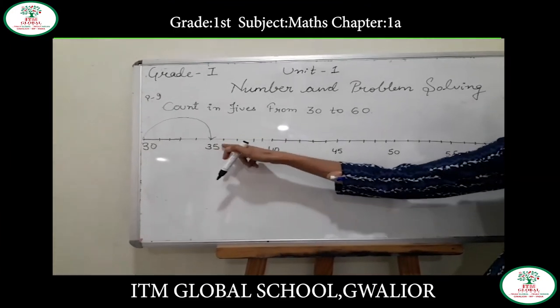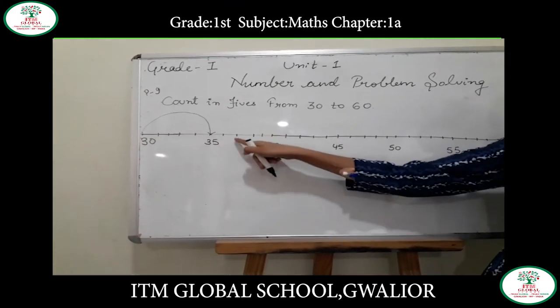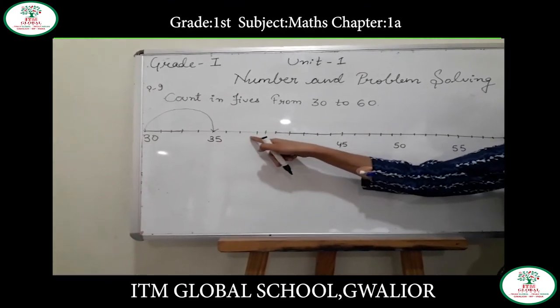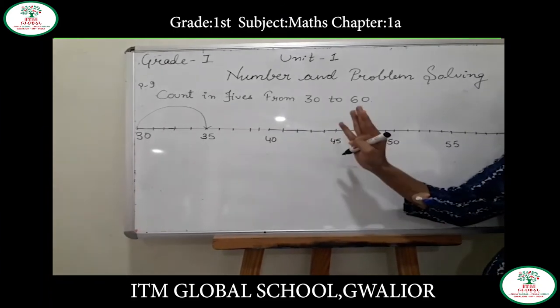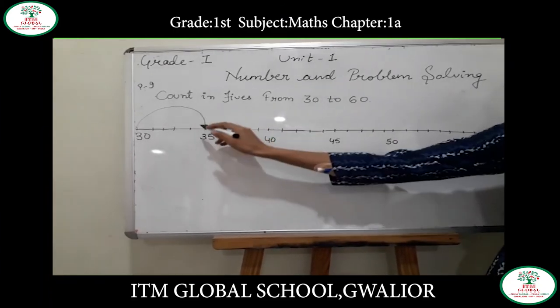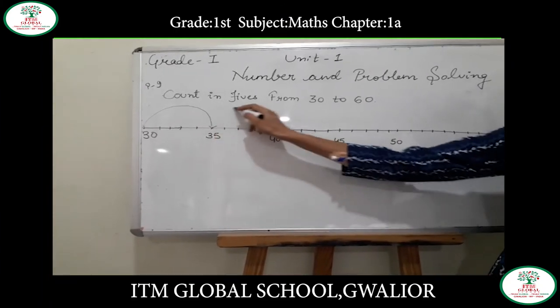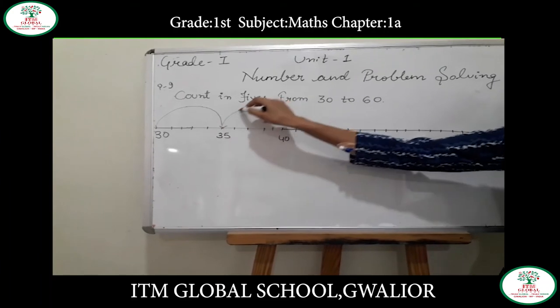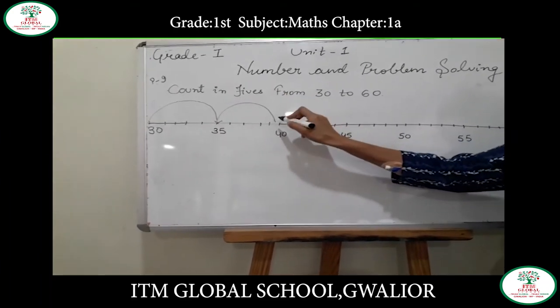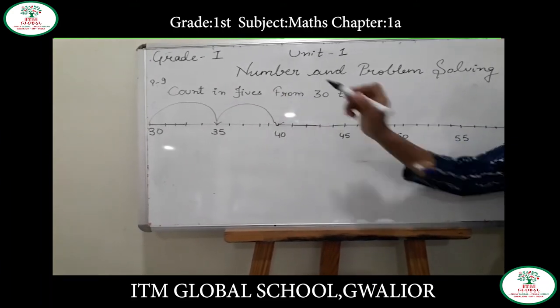After 35: 36, 37, 38, 39 — skip those 4 numbers and come to the next number, which is 40.